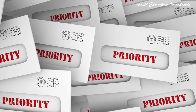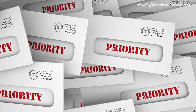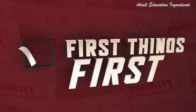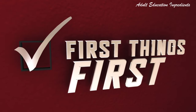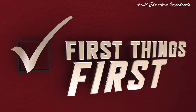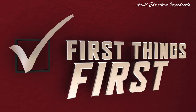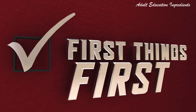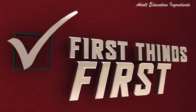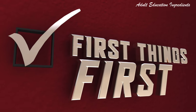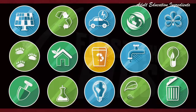People included in the priority setting strategies are the policymakers, resource people, and the participants themselves. The next strategy is resources.